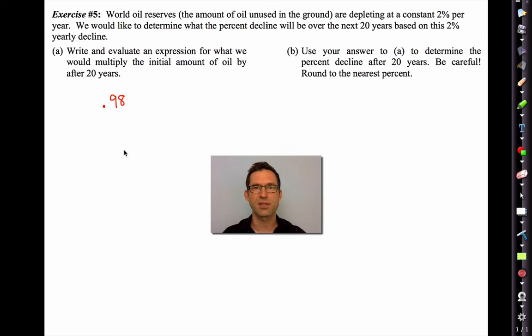This goes right back to what we did in the last lesson with percent decrease. Now that's what we're going to multiply by every year. Every year, we're going to multiply by 0.98 because we're going to have 98% left of what we had the year before. So after 20 years, we're going to multiply by this. We're going to get 0.98 to the 20th. And that's 0.6676, etc. So that's what we multiply by every 20 years.